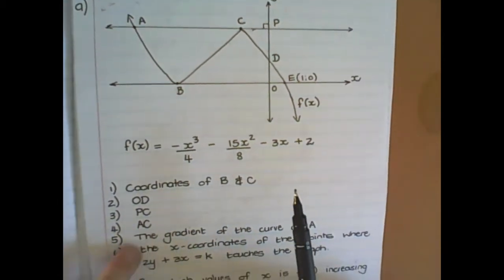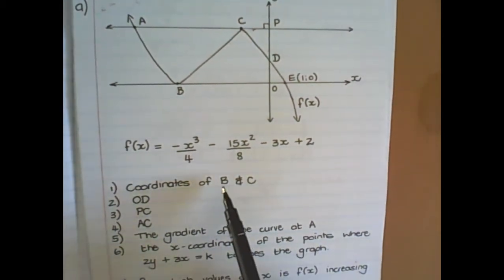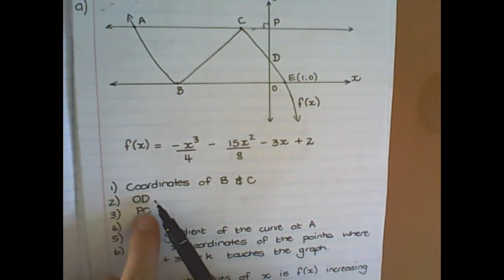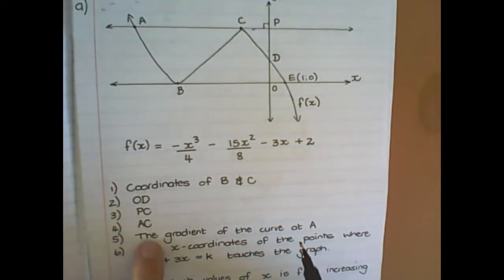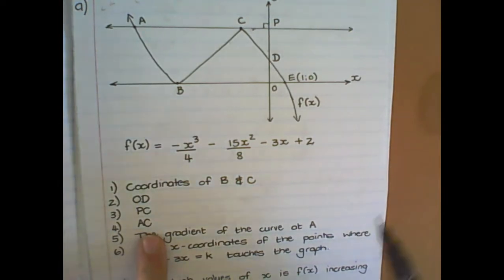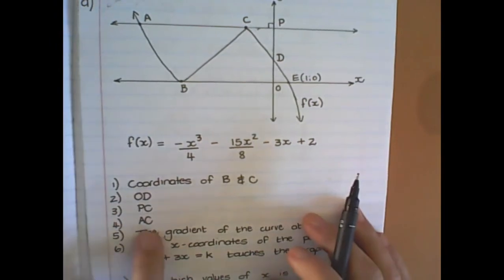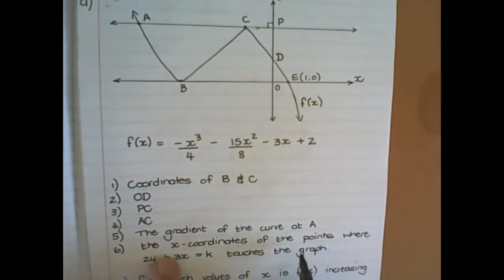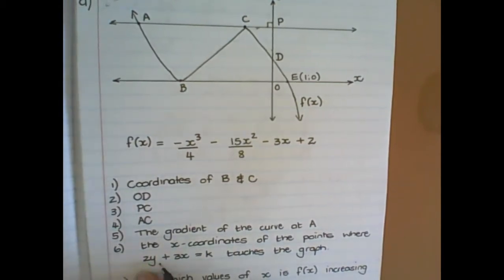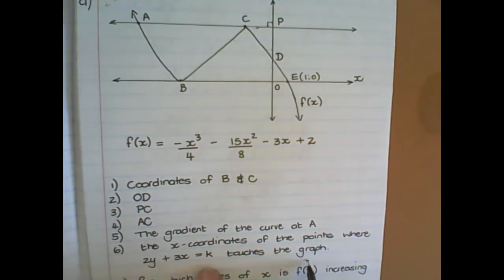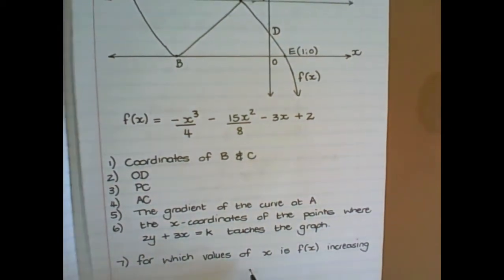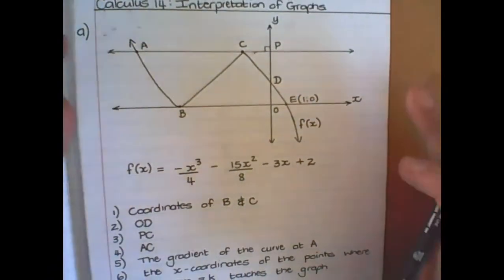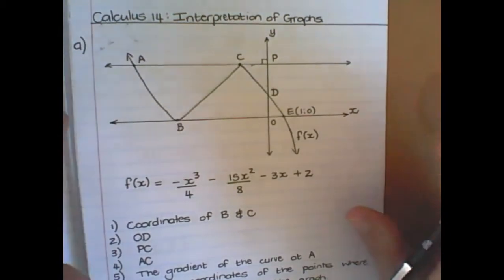And what we are going to do today is we are going to find the coordinates of b and c, we are going to find the length of od, the length of pc, the length of ac. This is like the normal question you would get in functions. Then the gradient of the curve at a, that's what we are going to find, and the coordinates of the points where 2y plus 3x equals to k touches the graph, and for which values of x is the graph increasing. So this is a normal exam type question, and that's the reason for us doing it.